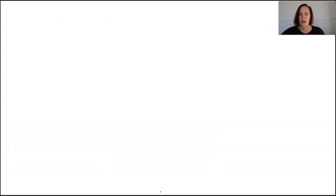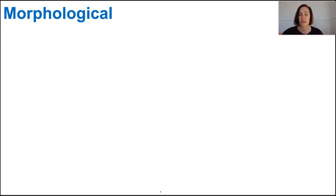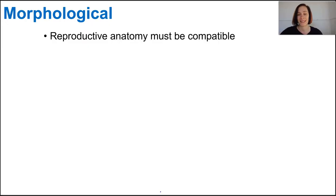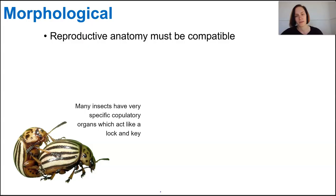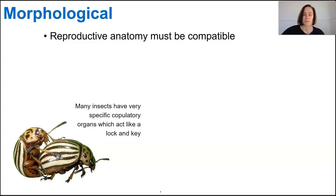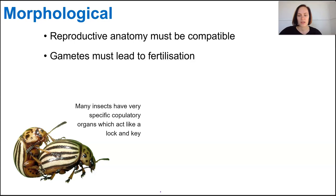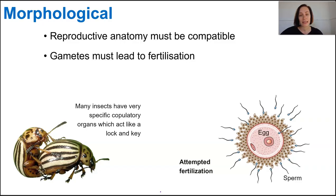Regardless of whether all these mechanisms are recognised, if the anatomical structures associated with reproduction aren't compatible, that will ultimately stop fertilisation from occurring anyway. Reproductive organs may not fit together to deposit gametes — like a lock-and-key mechanism seen in some bugs — and certain body types of dog breeds simply can't physically mate. Flowering plants also evolve structures that allow only specific insect pollinators. Similarly, if gametes are incompatible when they meet, there will be no fertilisation.